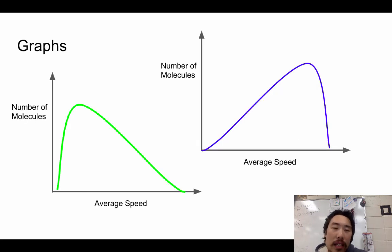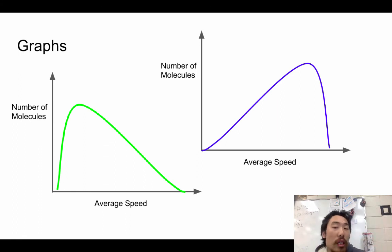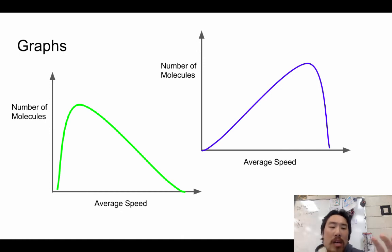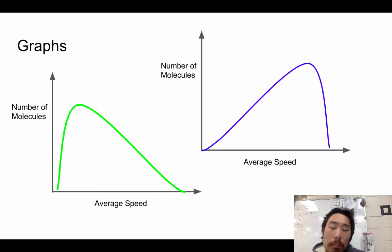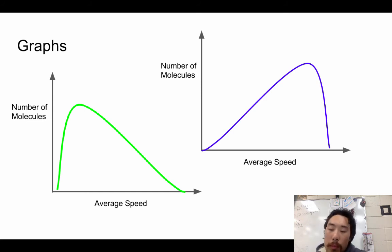Looking at the kinetic molecular theory graphs, we have two graphs: one for the green gas and one for the blue gas. The green graph has a lower temperature because it has a lower average speed, assuming the same number of molecules, because in the kinetic energy formula the velocity is squared. The blue gas has a lot more speed, which means more energy, which also translates to a higher temperature when comparing the two.